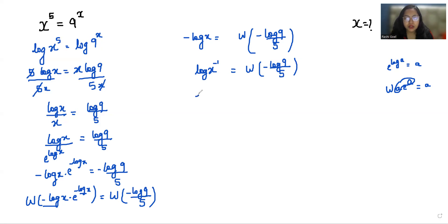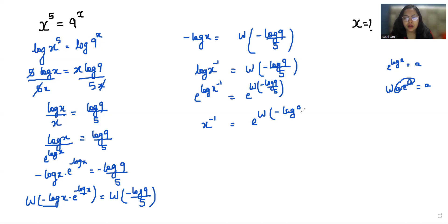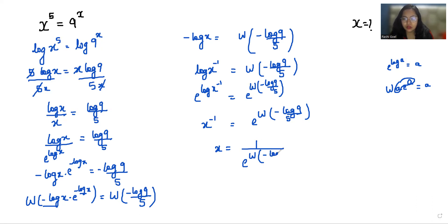To find the value of x, I'm going to take the reciprocal and apply the exponential. This becomes e to the negative W of negative log 9 over 5. We can also write log 9 as 2 log 3. This is the final value of x.